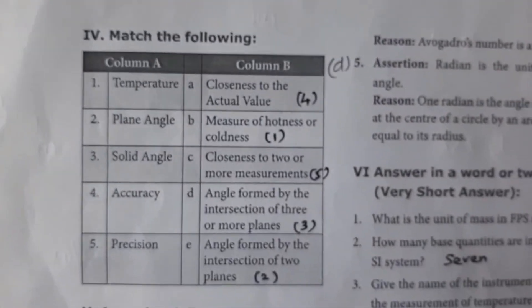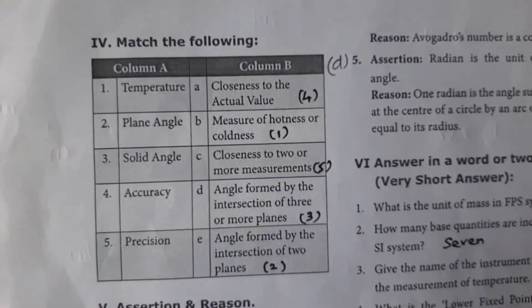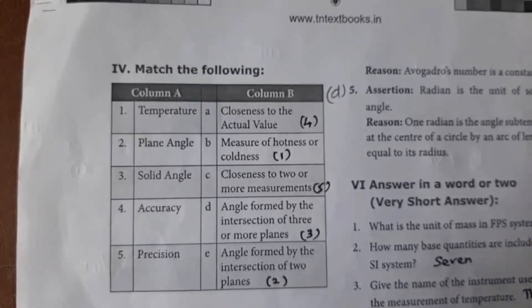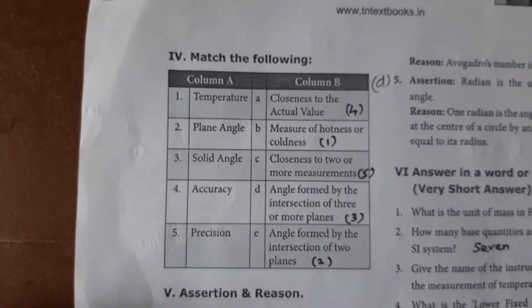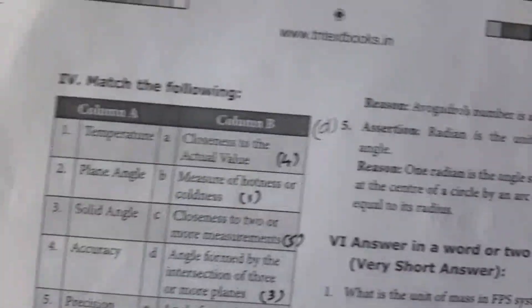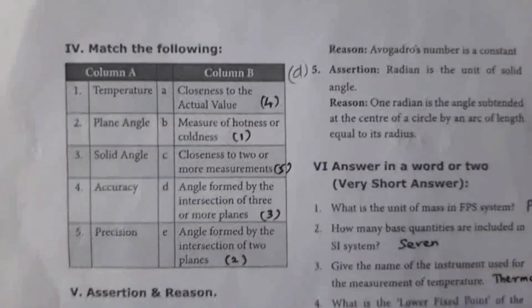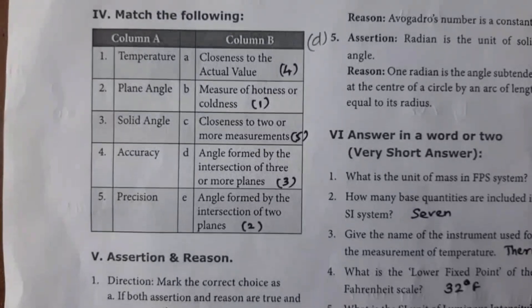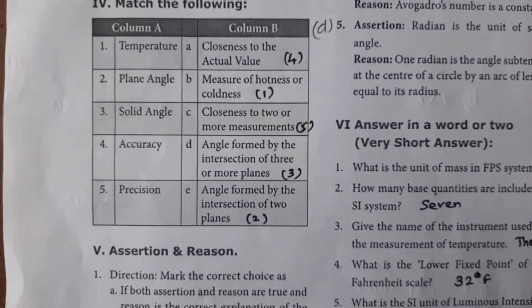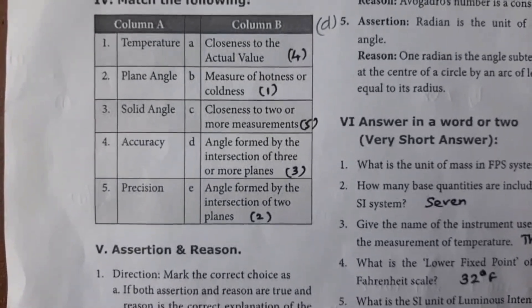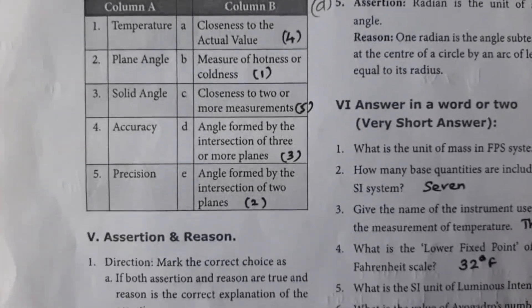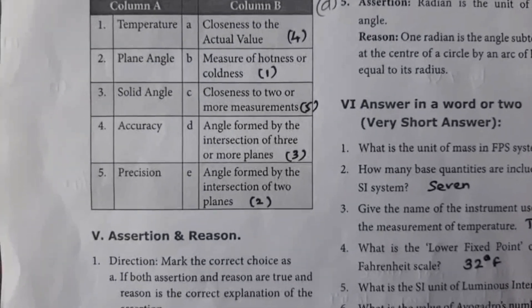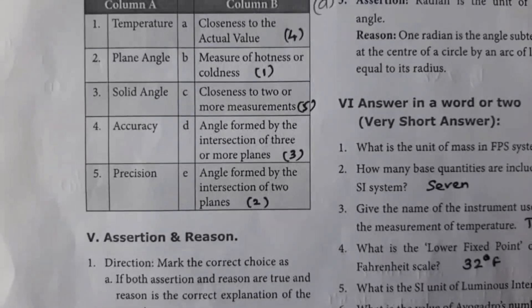Match the following. Temperature — B: measure of hotness or coldness. Plane angle — E: angle formed by the intersection of two planes. Solid angle — angle formed by the intersection of three or more planes. Accuracy — A: closeness to the actual value. Precision — closeness of two or more measurements.